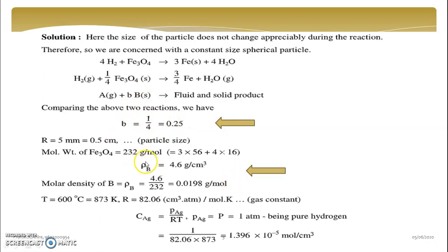Now density, density will be 4.6, it should be divided by 232, because it is a molecular weight of that compound Fe3O4, and hence your density will be in molar form.